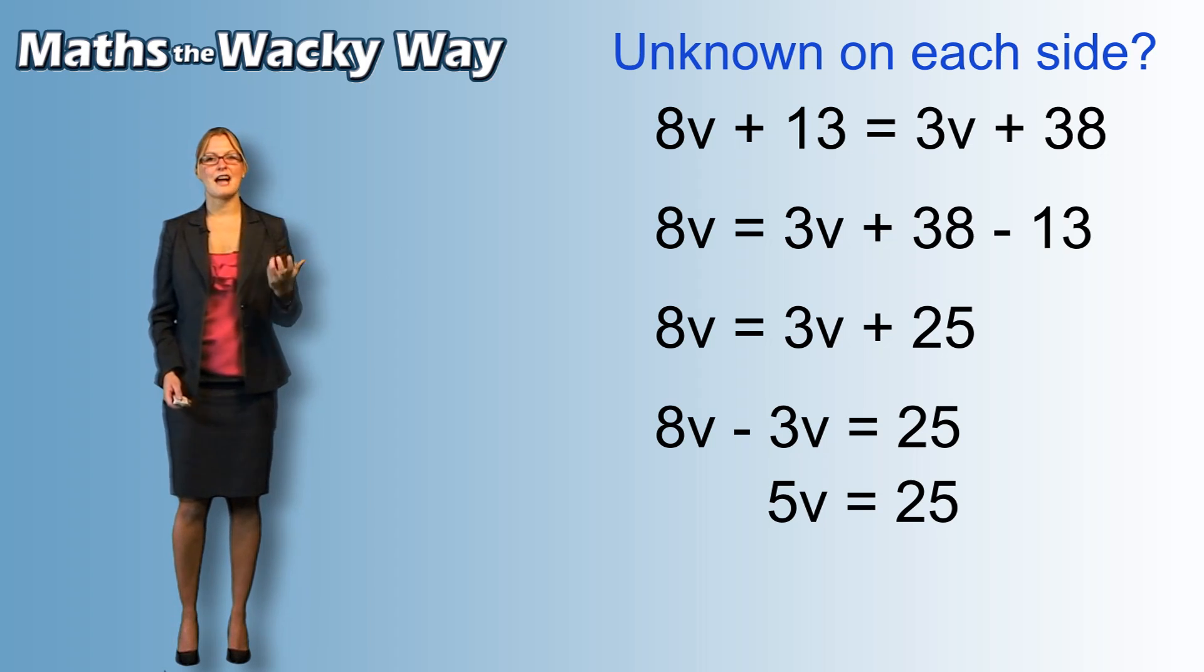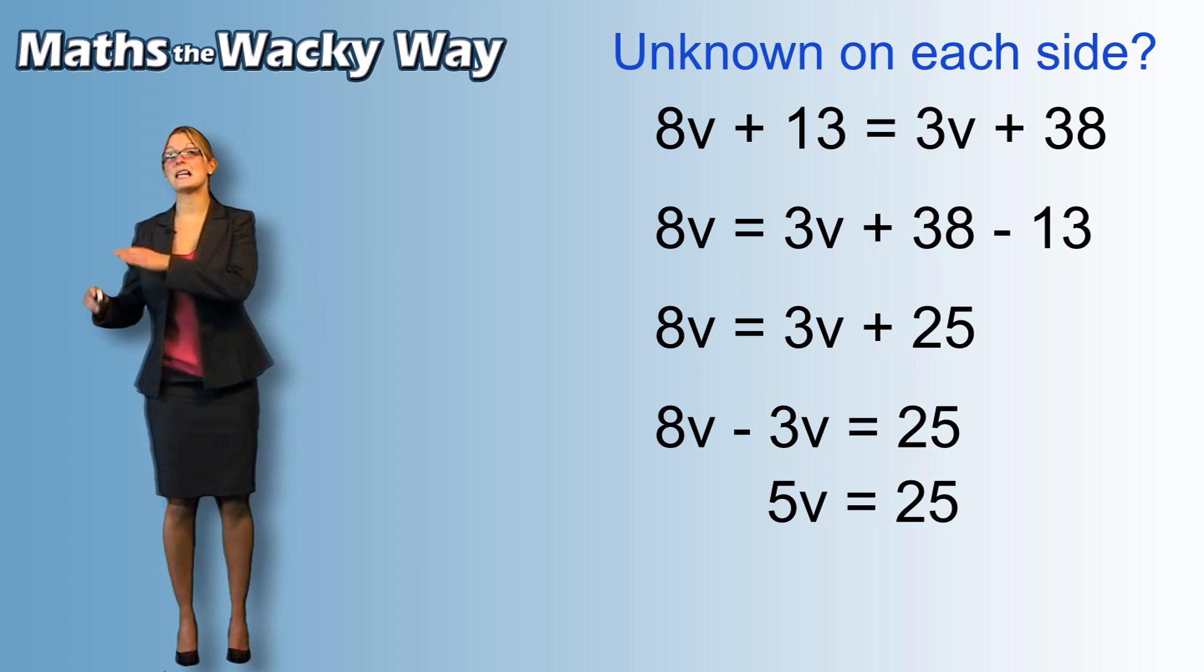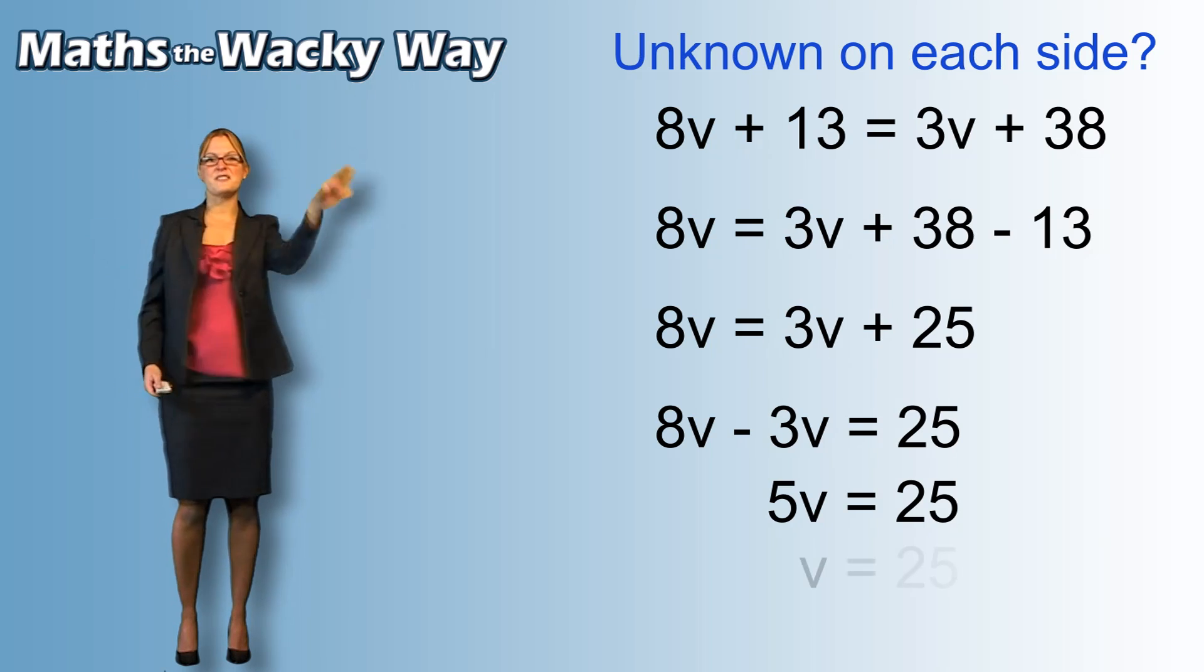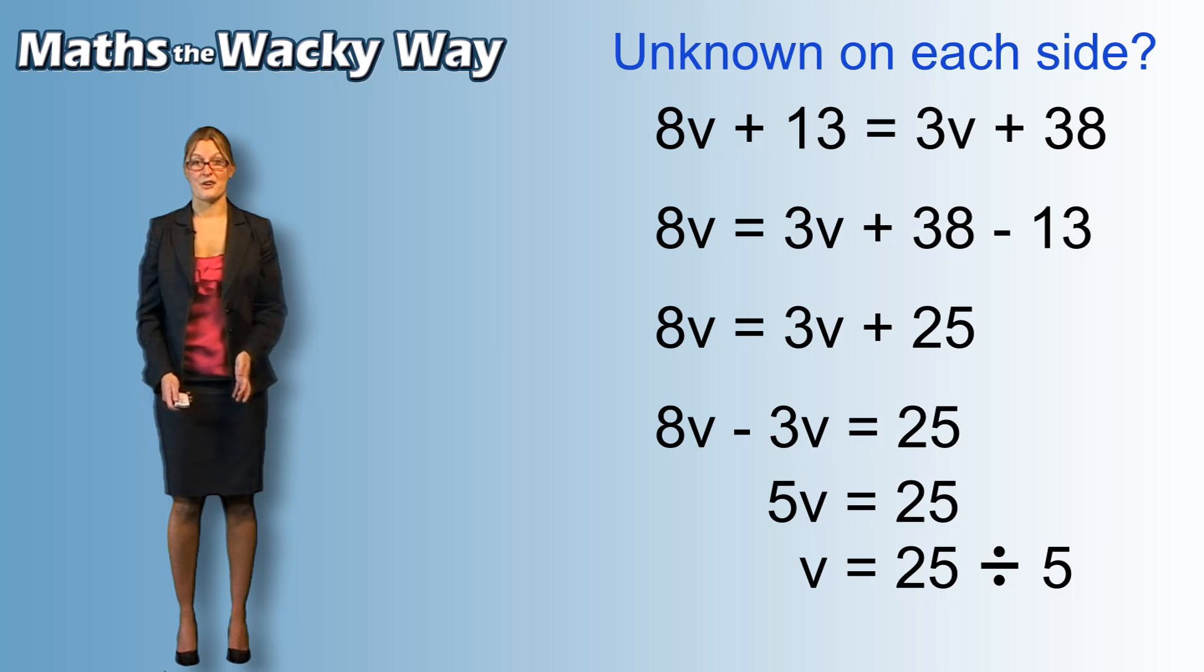So, we just now need to get the v on its own. We're going to have to move the 5. Well, the 5 is currently multiplying. So, it will get high-fived. It will go to the other side and it will become a divide. So, we have 25 divided by 5, which of course gives us 5.